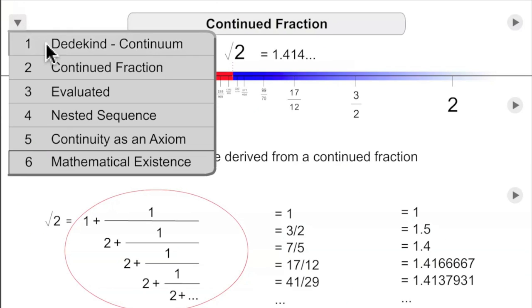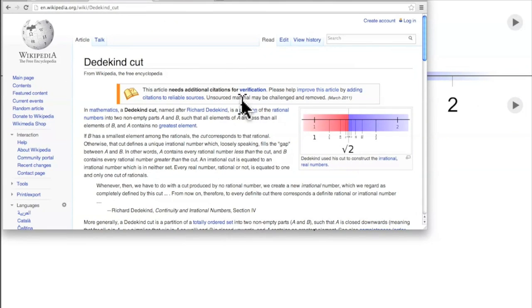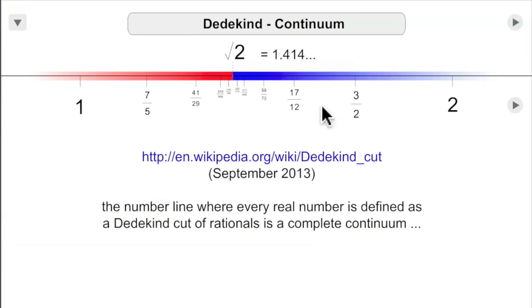This particular illustration I got from Wikipedia. This is the Dedekind Cut article on Wikipedia, and there's the illustration. And it turns out that the numbers they use here are a continued fraction.